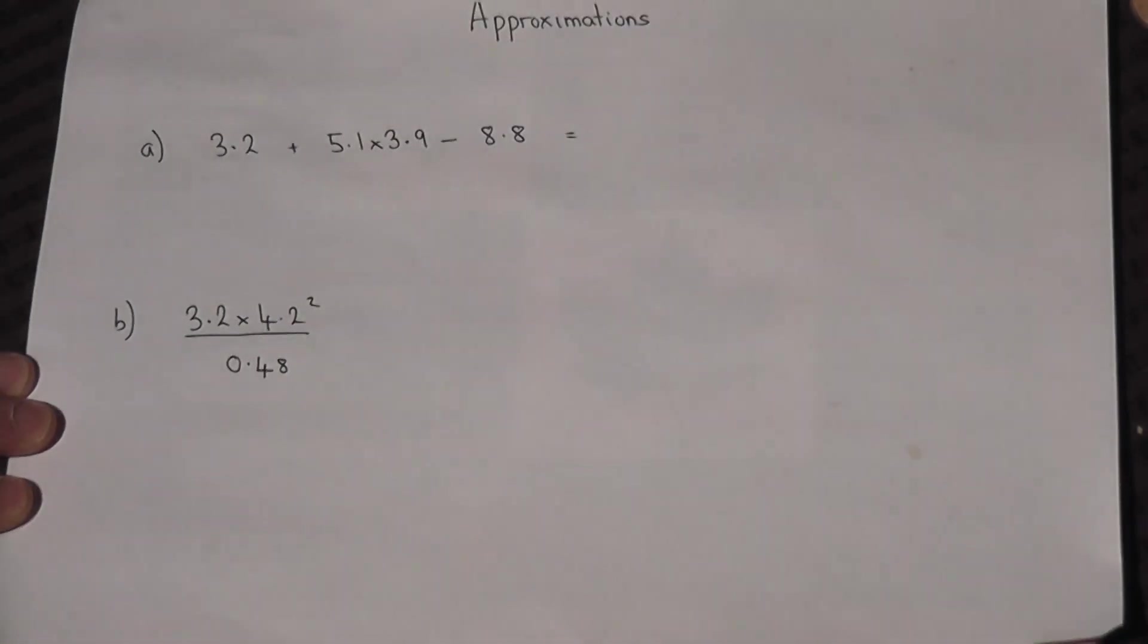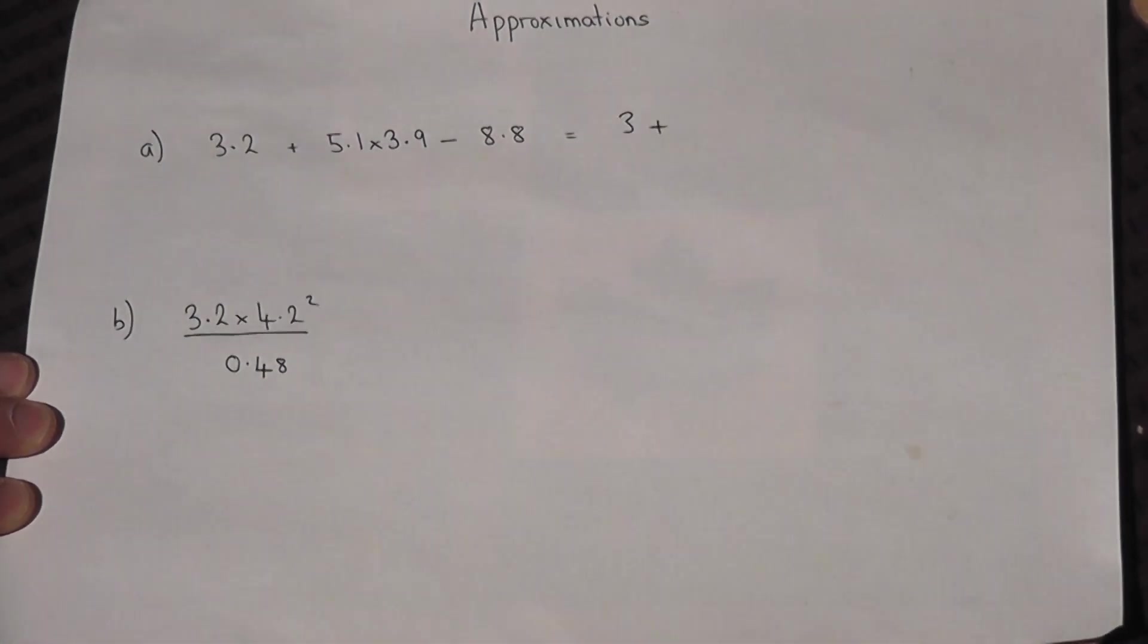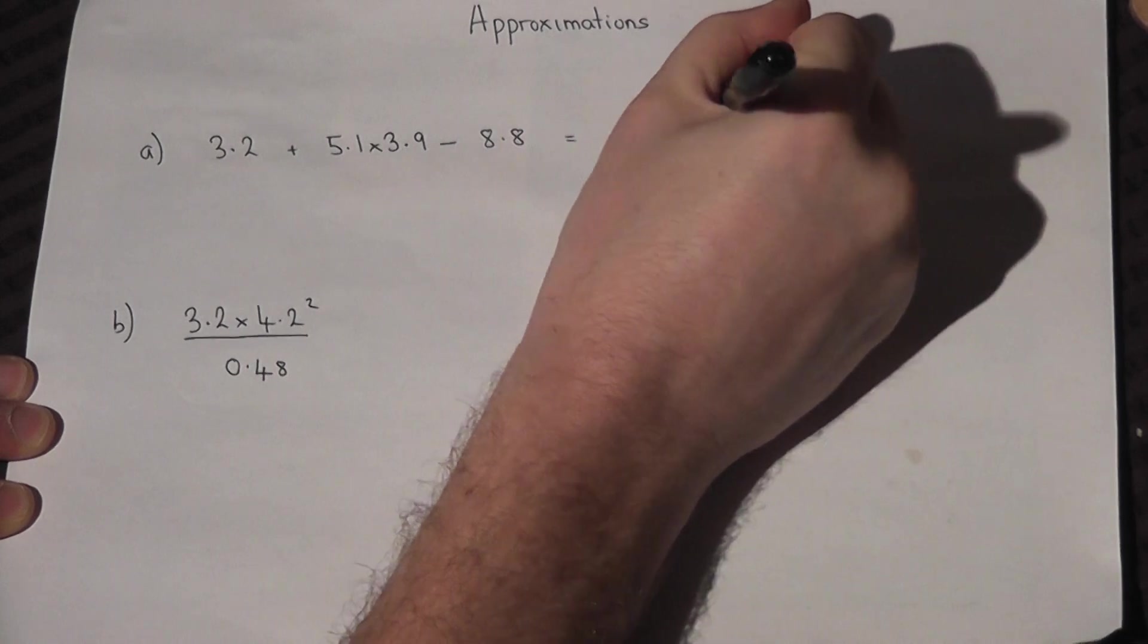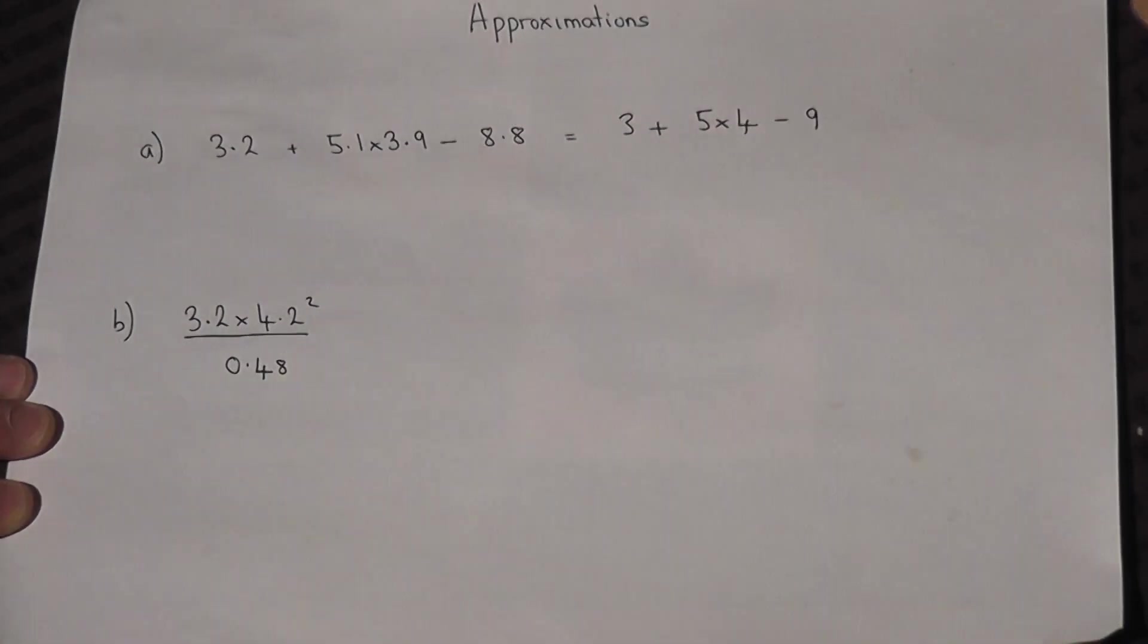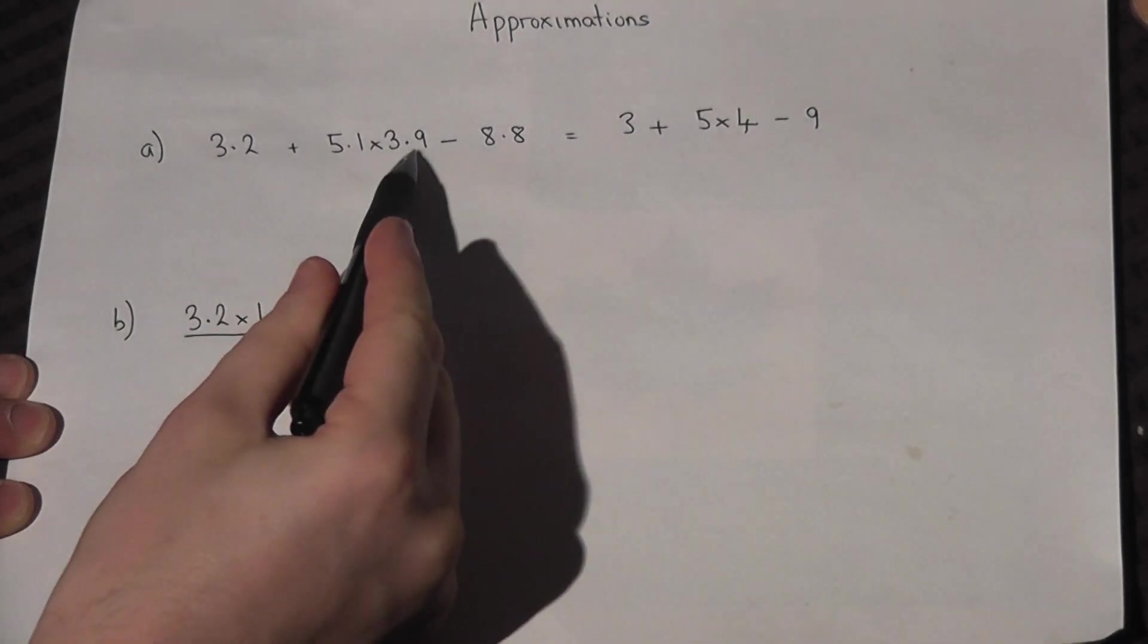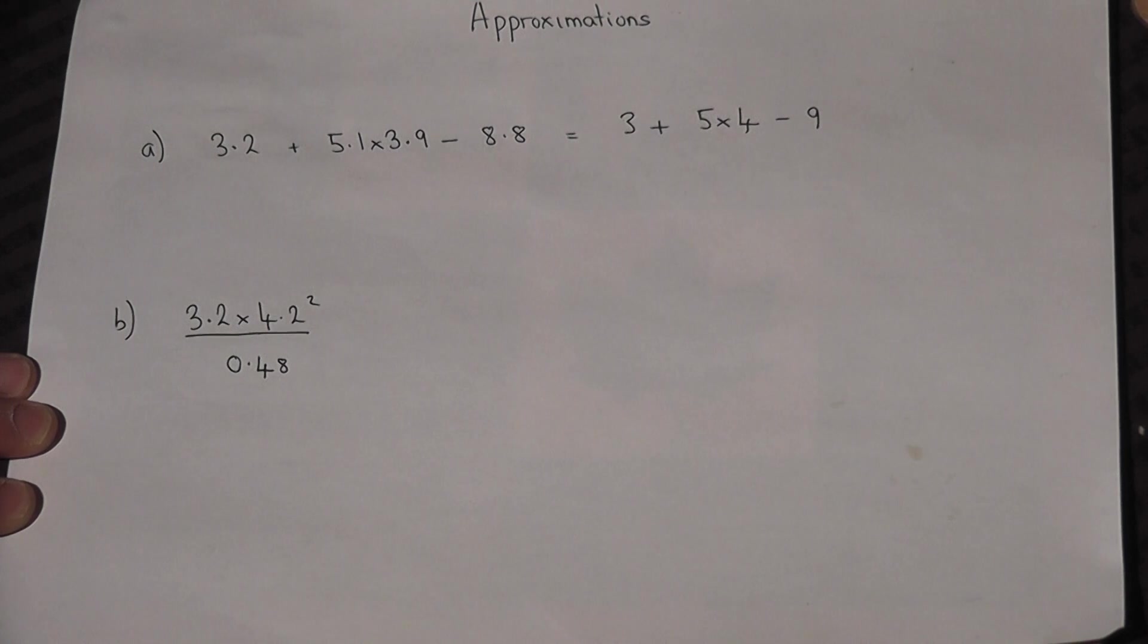So step one is to go through each number and round it to a nice number. So 3 plus 5 times 4 take away 9. So I've rounded each of those numbers to the nearest integer. That's the first mark.